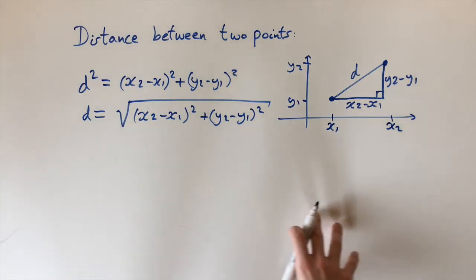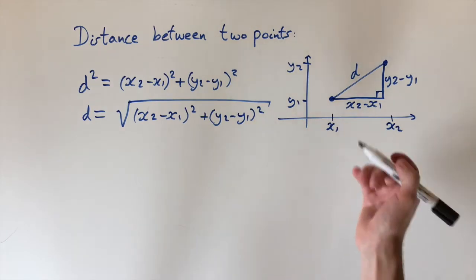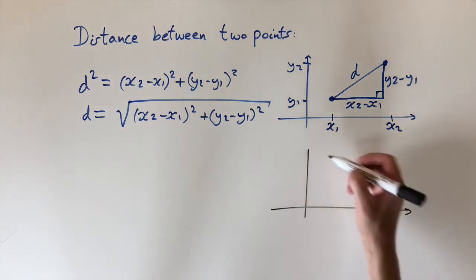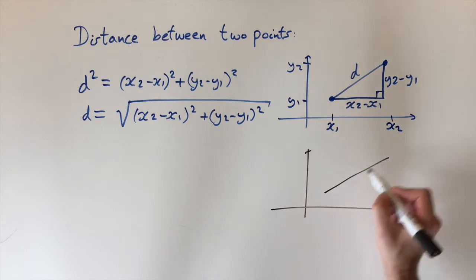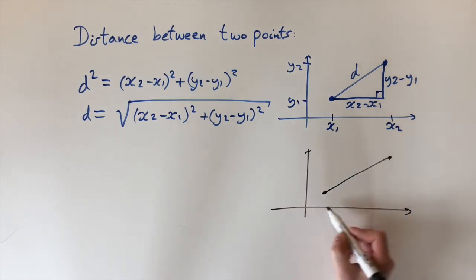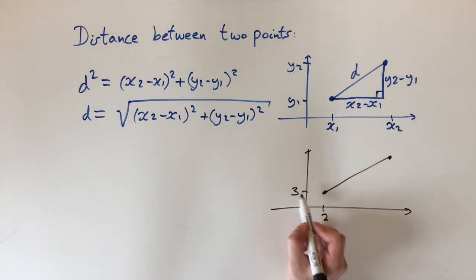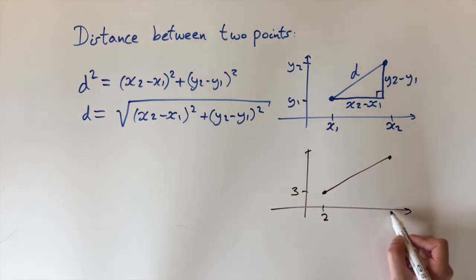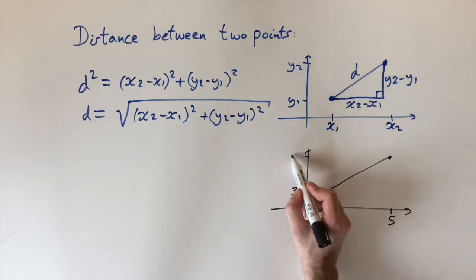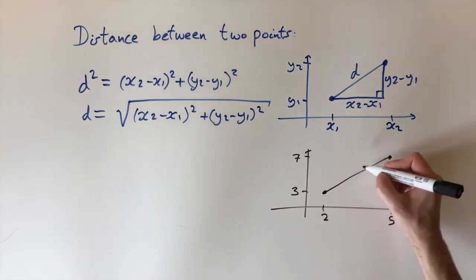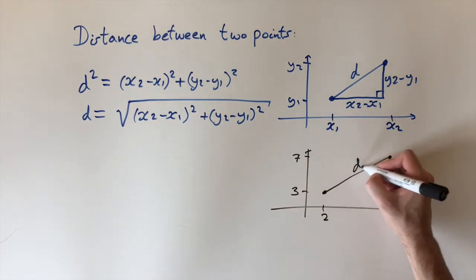So this is good. It's very abstract, but let's look at an example now just to use this formula. So if we do a similar diagram, but this time we're going to use some numbers. If we say this point has coordinates 2 in the x component and 3 in the y component, and then for the second point, if we say it has x-coordinate 5 and y-coordinate equal to 7, and then we want to find the distance between these two points.